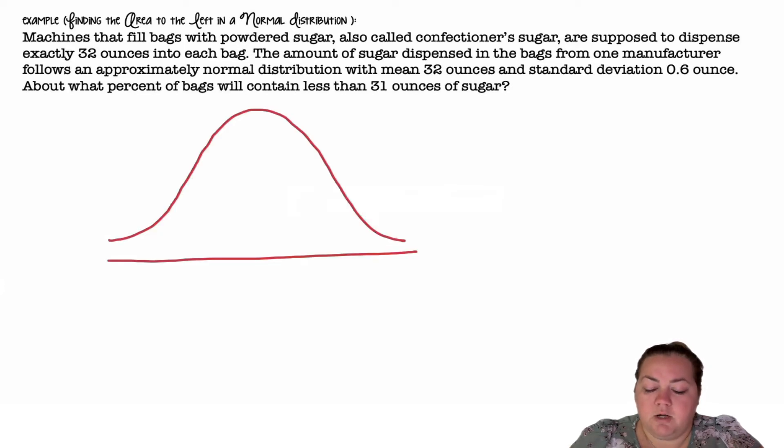Alright, so I'm going to start by drawing my normal distribution. It's a normal distribution with a mean of 32 ounces and a standard deviation of 0.6. So 32 goes in the center. I'm going to go three standard deviations above, three standard deviations below.